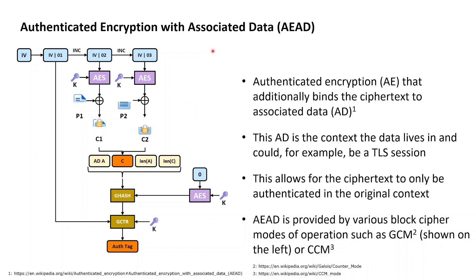Authenticated encryption with associated data (AEAD) is authenticated encryption that additionally binds the ciphertext to associated data — the context the data lives in — which could for example be a TLS session or header fields of a data package where the payload itself is encrypted. AEAD is provided by various block cipher modes of operation, with two of the most famous being the Galois counter mode (GCM) and the counter with CBC-MAC mode (CCM).